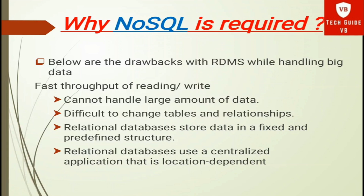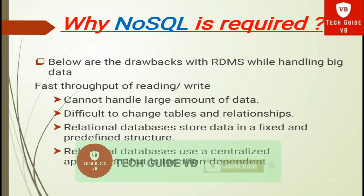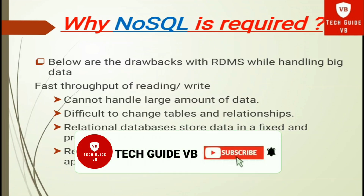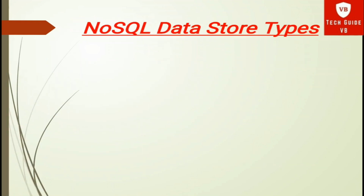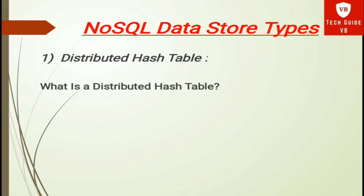Fourth drawback: relational databases use a centralized application that is location-dependent, whereas NoSQL databases are designed to distribute data on a global scale. So these are some advantages of NoSQL over RDBMS. The NoSQL data storage types we will cover — the first one is the distributed hash table.